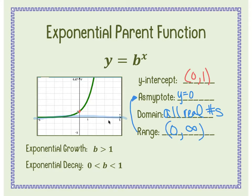This picture is an example of exponential growth, because the graph is increasing from left to right. But if b was a decimal between 0 and 1, it would be exponential decay, and the graph would be decreasing from left to right.